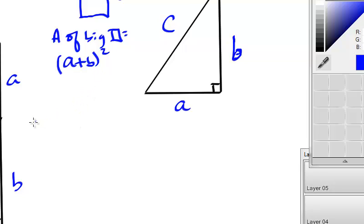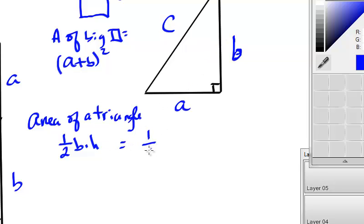Now, I am going to find the area of a triangle. Remember, nothing's labeled with numbers here. So the formula for the area of a triangle is, of course, one half base times height, which in ours would be equal to one half A times B, or we call it one half AB.